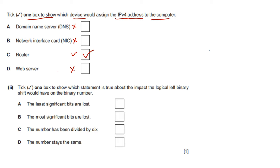Tick one box to show the impact a logical left shift would have on a binary number. Option A: the least significant bits are lost — no. Option B: the most significant bits are lost — that is correct. Option C: the number has been divided by 6 — no. Option D: the number stays the same — no. The correct option is B.